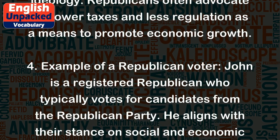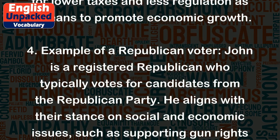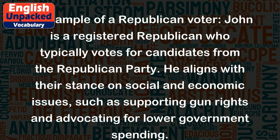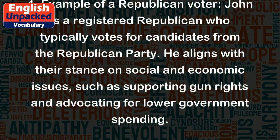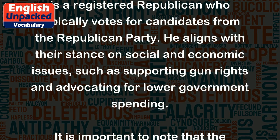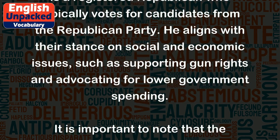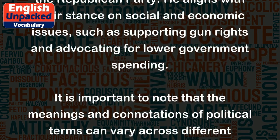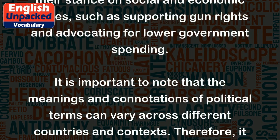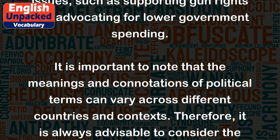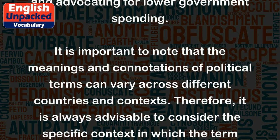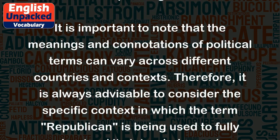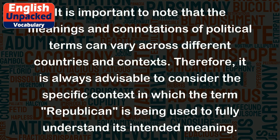Example four — Republican voter: John is a registered Republican who typically votes for candidates from the Republican Party. He aligns with their stance on social and economic issues, such as supporting gun rights and advocating for lower government spending. It is important to note that the meanings and connotations of political terms can vary across different countries and contexts.